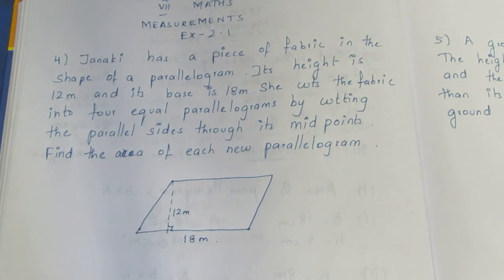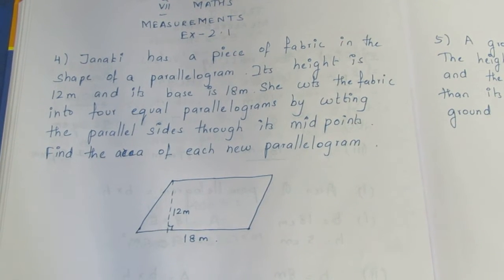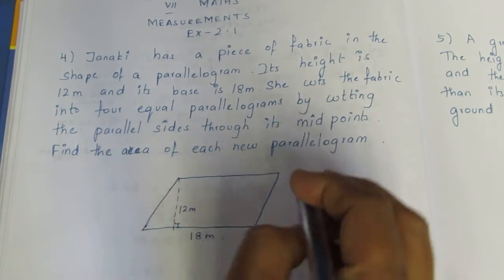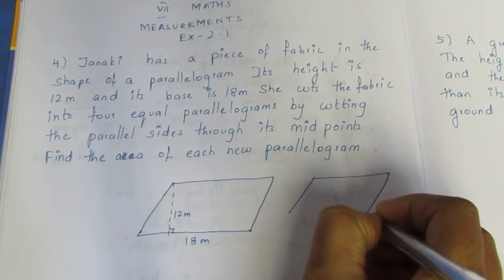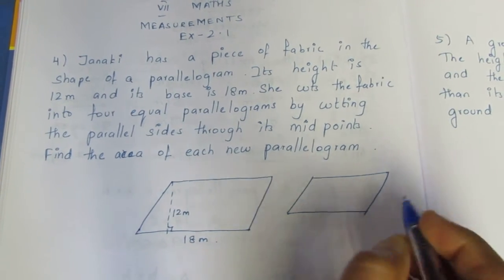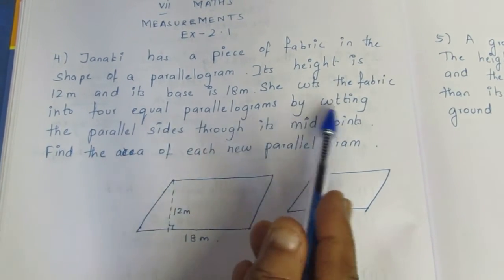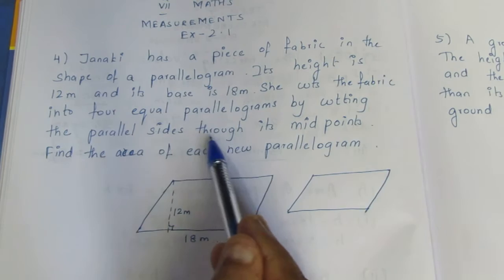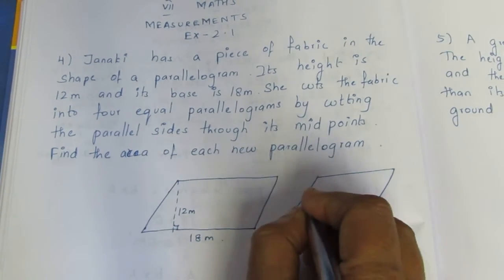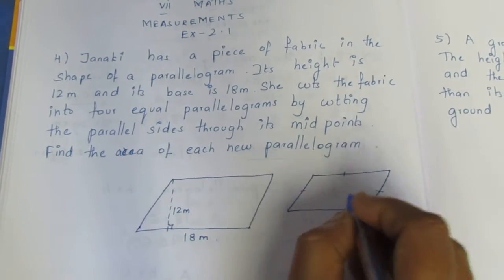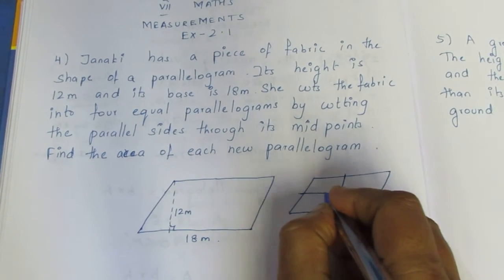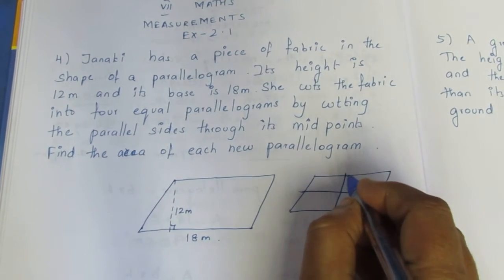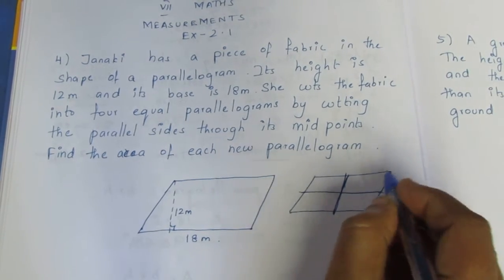She cuts the fabric into 4 equal parallelograms. To cut it into 4 equal parts, we cut through the midpoints of the parallel sides and join them, giving us 4 equal parallelograms.